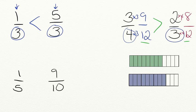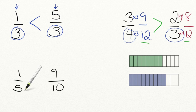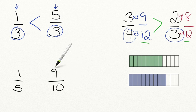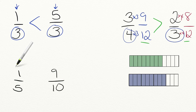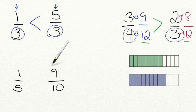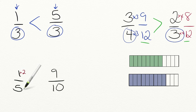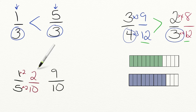Let's try one more practice problem. Which number is greater: one-fifth or nine-tenths? Our denominators are different. However, nine-tenths is pretty close to one whole, whereas one-fifth is still four-fifths away from one whole. So logically, nine-tenths should be greater. We verify by finding a common denominator — multiplying one-fifth's numerator and denominator by two gives us two-tenths, and two-tenths is less than nine-tenths.